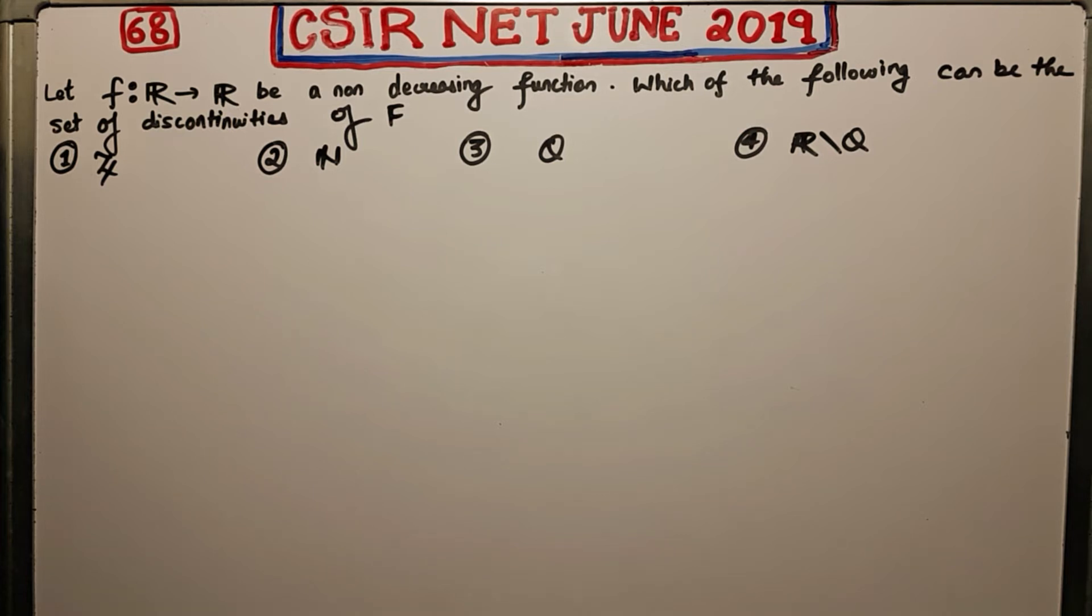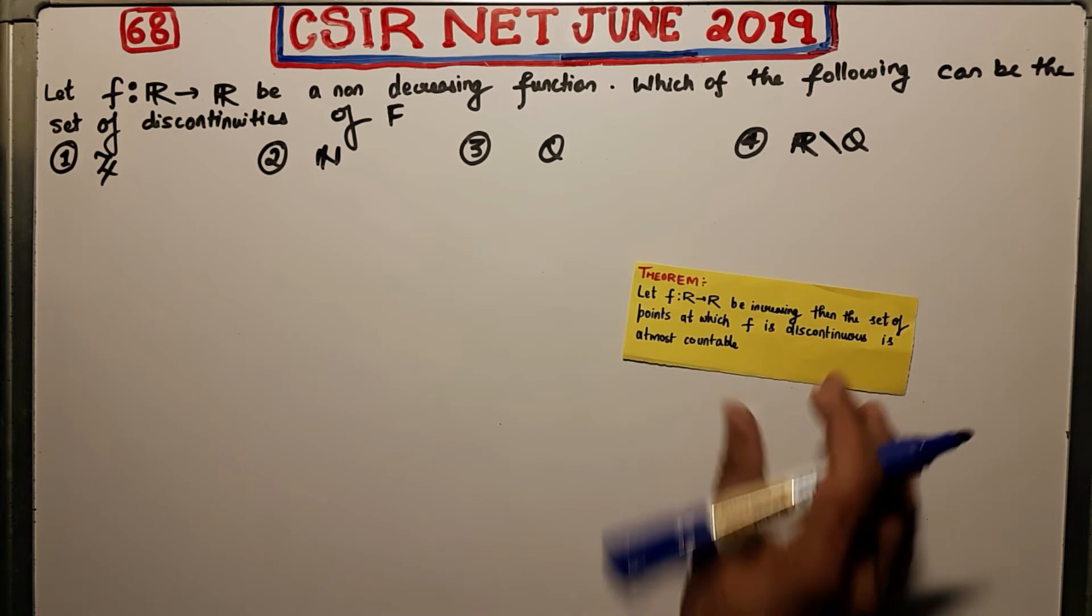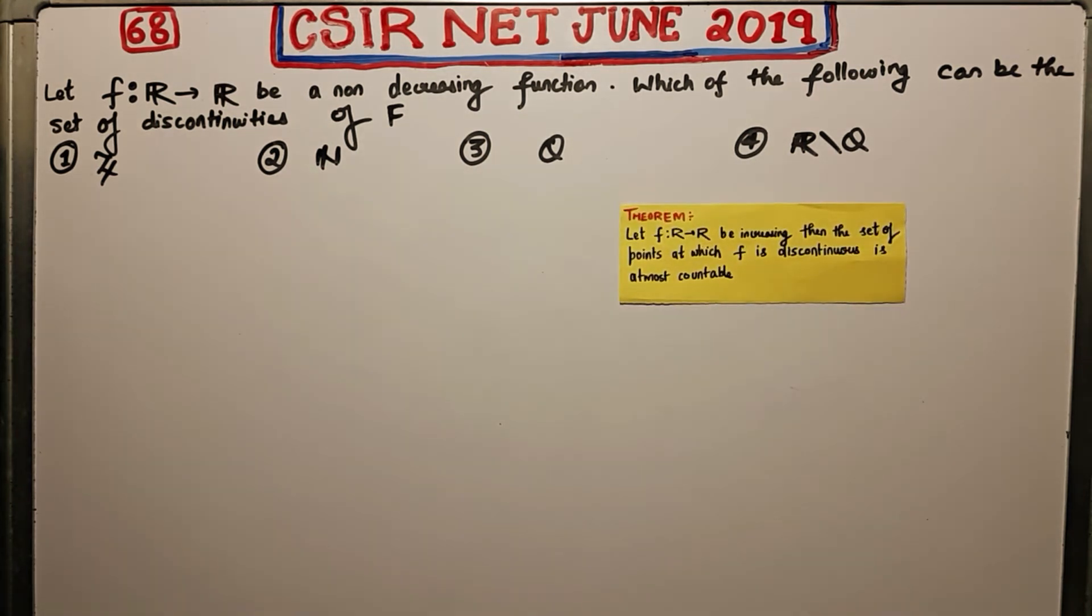So what is that result? I will show this to you. This is the theorem that I am talking about. This theorem actually says that if f is a real valued function and it is increasing, then the set of points at which f can be discontinuous is at most countable.